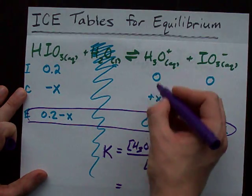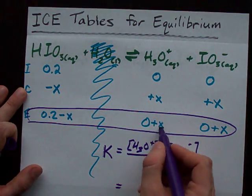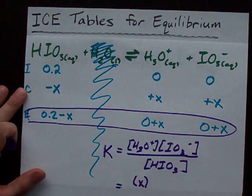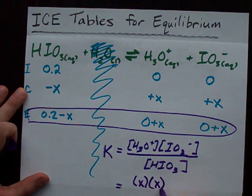And what you're going to do is plug the equilibrium concentrations that contain X into this equation. H3O+, the concentration is 0 plus X. Well, that's just X. Iodate concentration is also just X.